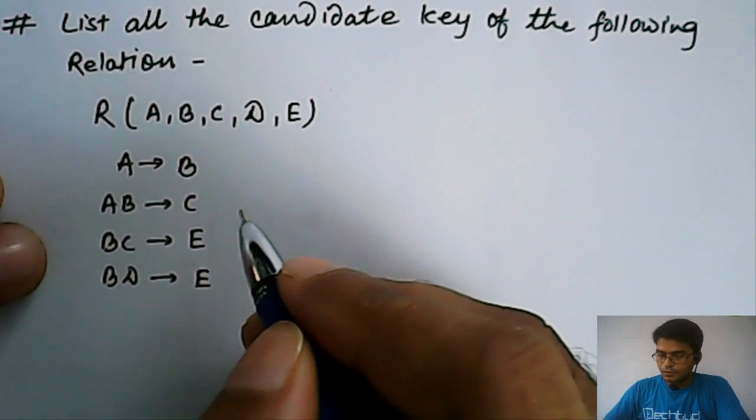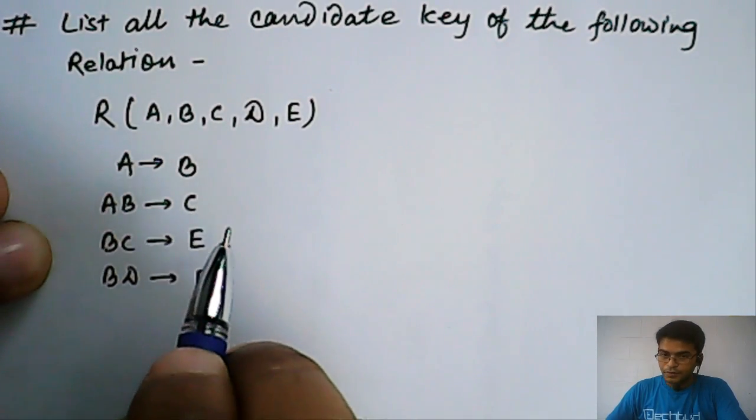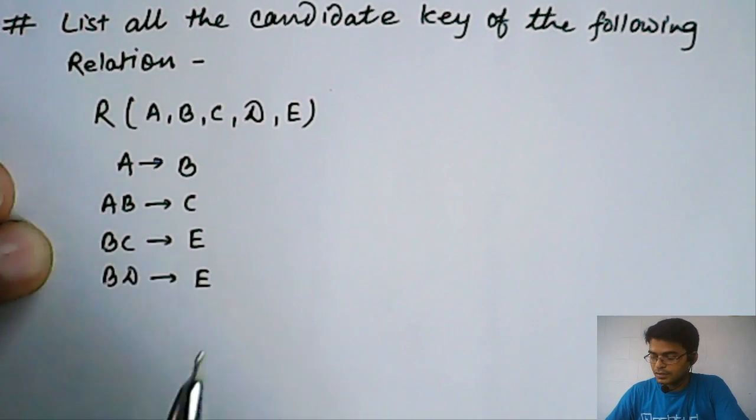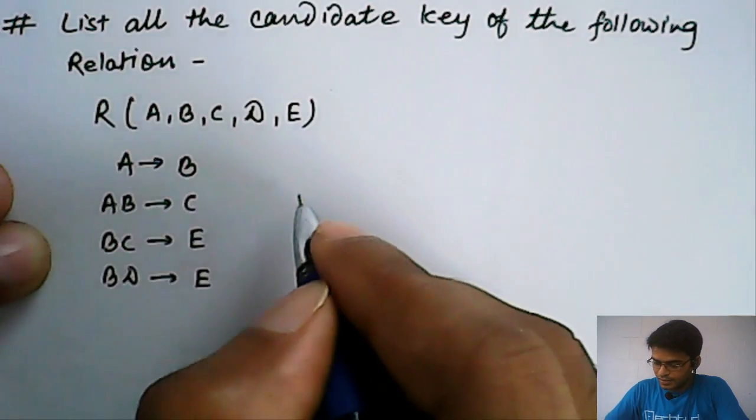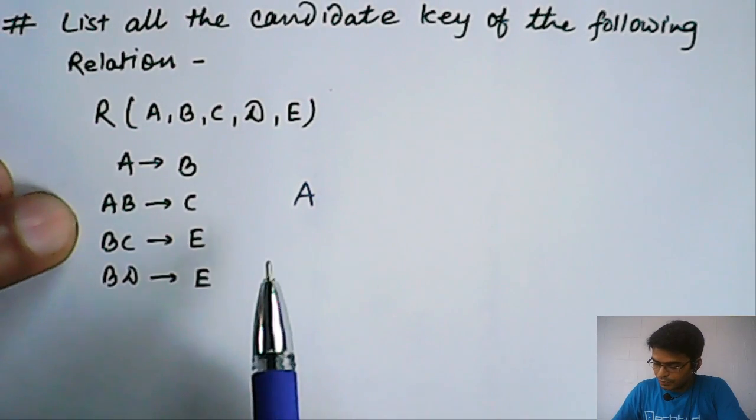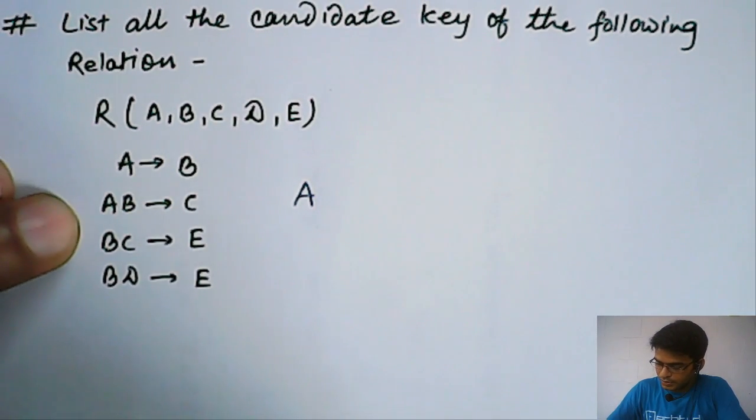Here, as I earlier said, we will start with an attribute which is not present on the right side of the functional dependencies. So, the attribute which is not present on the right side is A. Apart from A, B, C, D... D is also not present.